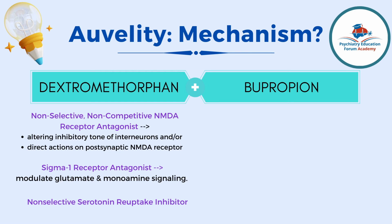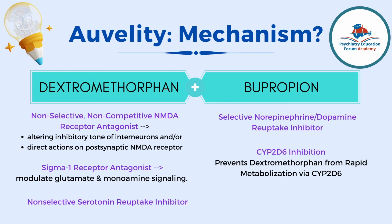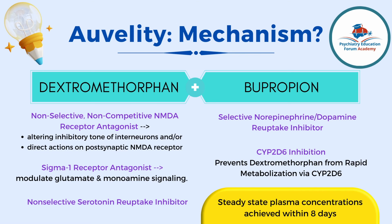Moving on to bupropion in this combination: we all know bupropion is a selective norepinephrine and dopamine reuptake inhibitor. But the main reason bupropion was added here is that it is a cytochrome P450 2D6 inhibitor. This is important because dextromethorphan gets broken down very quickly by CYP2D6 enzymes. Bupropion blocks that breakdown, thereby keeping dextromethorphan available for a longer duration, allowing all the mechanistic benefits to be realized. When given together, steady-state plasma concentration is achieved within eight days, making it a relatively quick-acting combination.